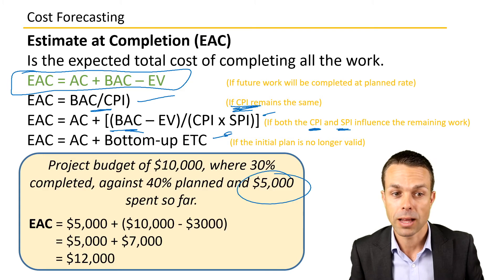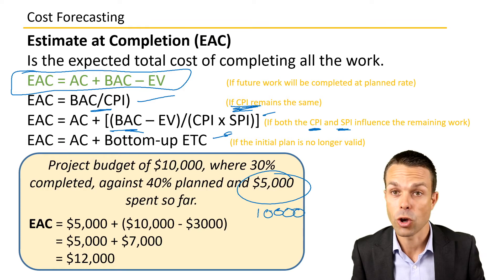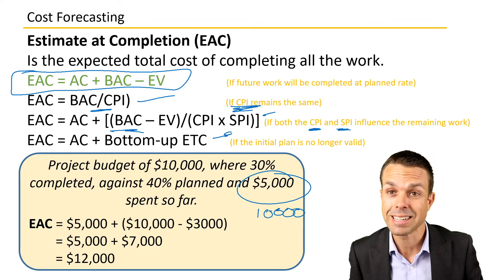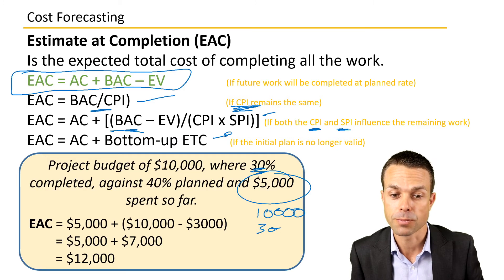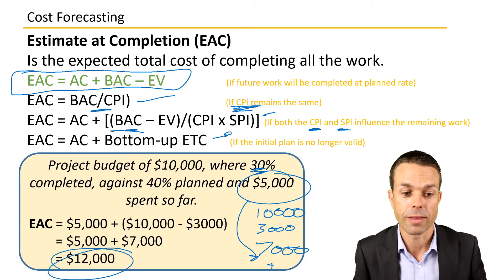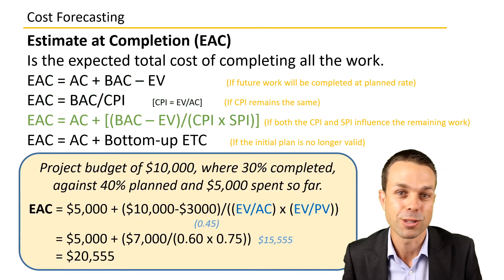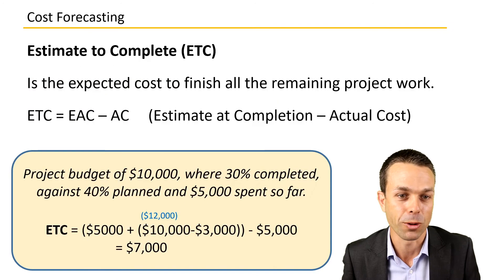For our purposes we're using the simple formula. We've got the Actual Cost of five thousand, plus the Budget at Completion of ten thousand, minus the Earned Value — which is what we've completed so far, thirty percent of ten thousand, equals three thousand. That's seven thousand plus five thousand, which equals twelve thousand dollars. So that's what we're going to use as our Estimate at Completion for this example.